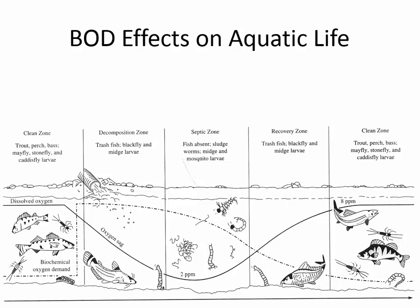Let me dim the lights so you can see this better. If we have a pipe discharging wastewater to a river, this wastewater has a food source for the microorganisms. The dashed line shows the concentration of food — as soon as the pipe discharges, the concentration of food is very high. The solid line shows the concentration of dissolved oxygen. As we go downstream, with water flowing left to right, notice that those two lines are going in opposite directions.